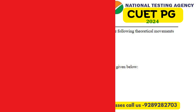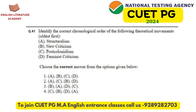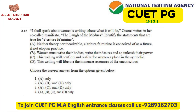The 41st question is from literary criticism, where students have to chronologically arrange literary movements like structuralism, post-colonialism, etc., in the order of their occurrence. Question 42 contains a quote by a renowned feminist writer and the options include elaborations of the quote. Students should comprehend these and choose one or more options that closely describe the quotation.